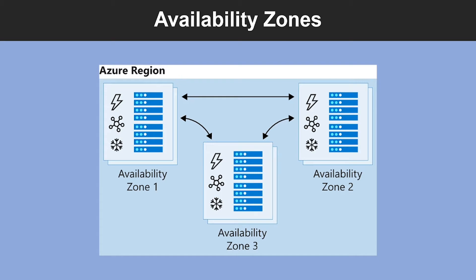Availability Zone helps you protect from an entire data center failure. An Availability Zone offers groups of one or more data centers that have independent power, cooling, and networking. The virtual machines in an Availability Zone are placed in different physical locations within the same region. You can use this architecture when you want to ensure that when an entire data center fails, you can continue to serve users. Availability Zones don't support all virtual machine sizes and aren't available in all Azure regions, so you need to check if they are supported in your region.